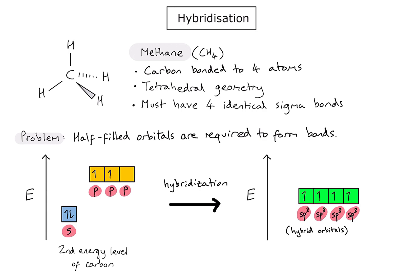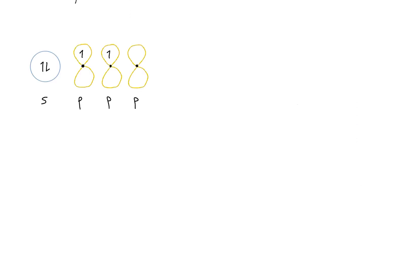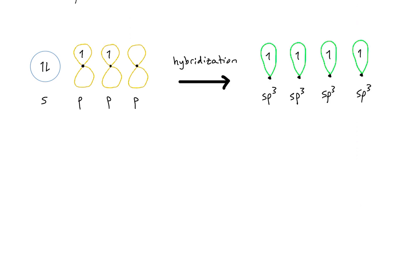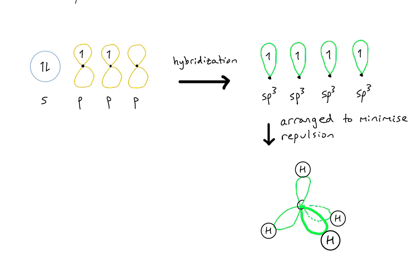Looking in more detail at the shapes of these orbitals: we started with an s and three p orbitals, with two electrons in the s and one electron each in two of the p orbitals. Through hybridization we created four equal-energy orbitals. The shape of a hybrid orbital, regardless of type, is like a single balloon shape. Arranging those four hybrid orbitals to minimize repulsion around the center of the atom gives us a nice tetrahedral geometry.